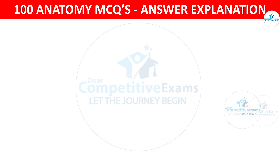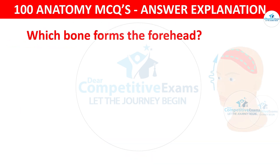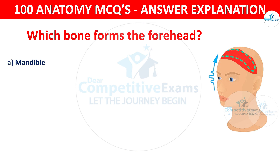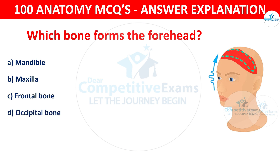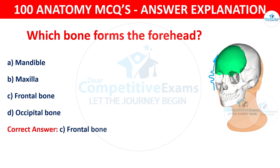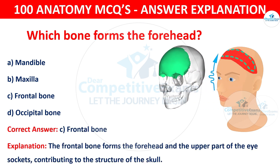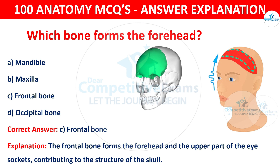Question number 99: Which bone forms the forehead? The options are: Mandible, Maxilla, Frontal bone, or Occipital bone. The correct answer is C — frontal bone. The frontal bone forms the forehead and the upper part of the eye sockets, contributing to the structure of the skull.